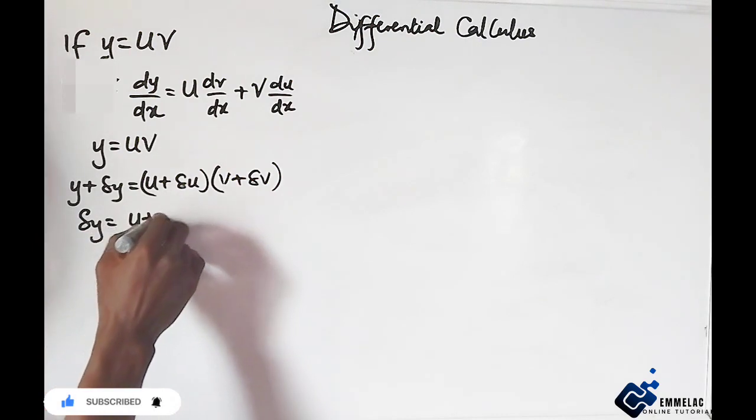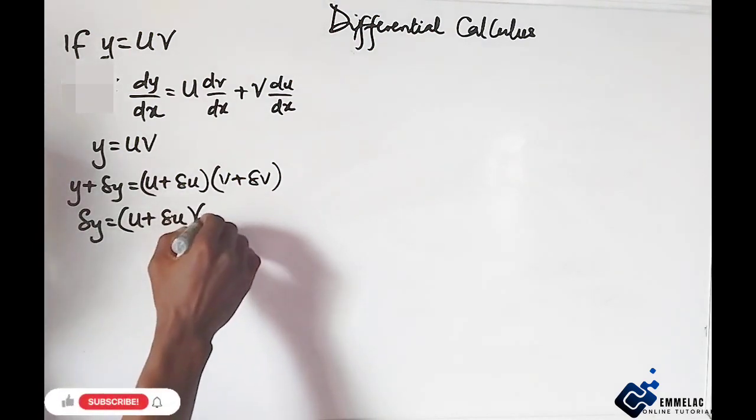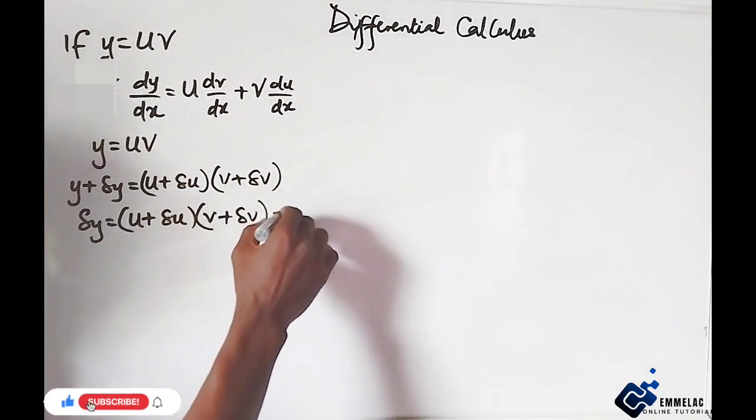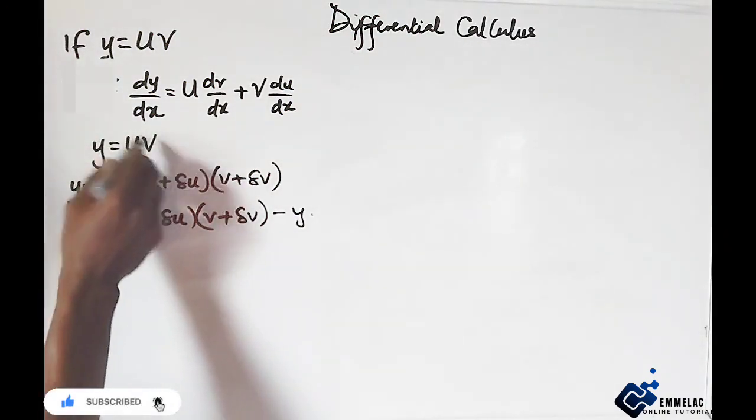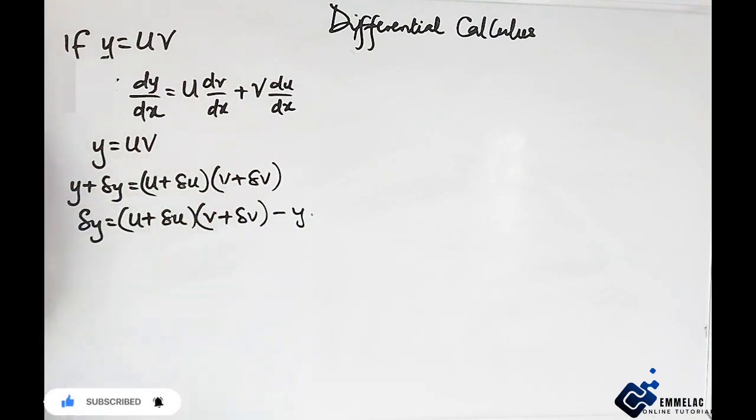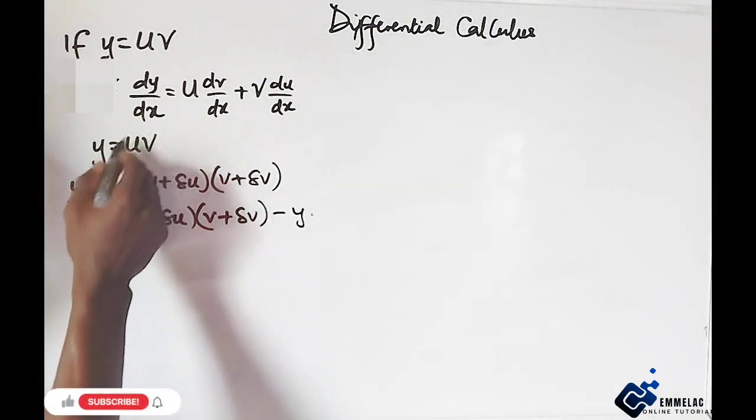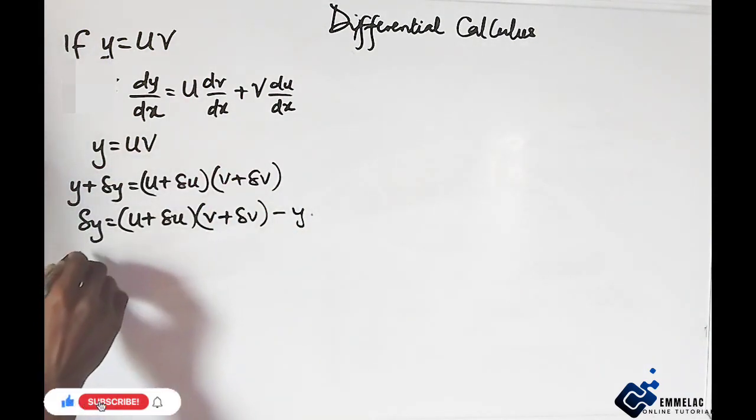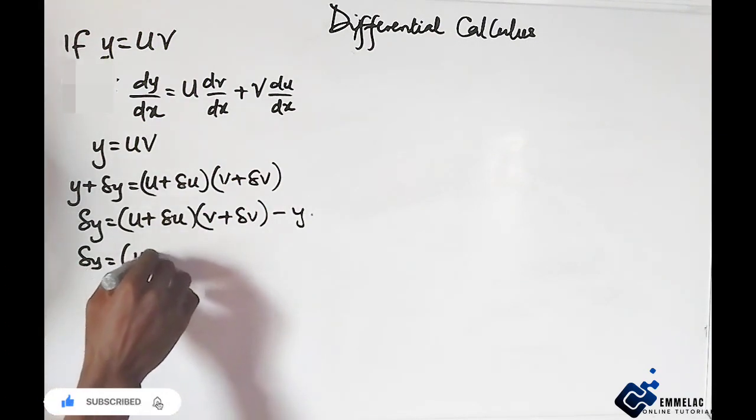Take note that from the beginning, y equals the product of u and v. So let us plug in uv for y in this equation. So change in y equals u plus change in u times v plus change in v minus uv.